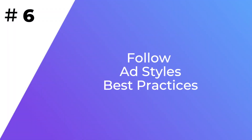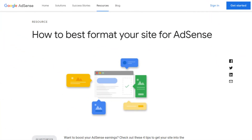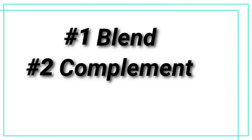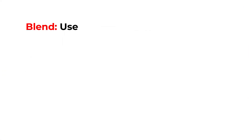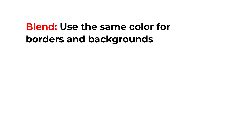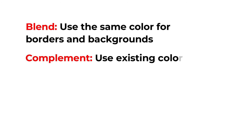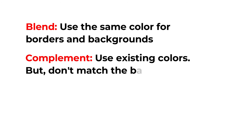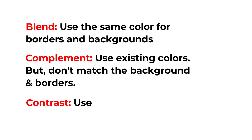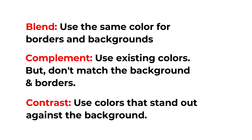The style and size of your ads can make a massive difference between the ads your visitors will notice and click on and the ones they skip right over. For best results, Google recommends using colors for your ad text and links that already exist on your site. Three popular techniques are proven to drive clicks: blend, complement, and contrast. To use the blend technique, use the same color for borders and backgrounds as that of your page. To use the complement technique, use colors that already exist on your site but don't match the background and borders exactly where the ads are placed. For the contrast technique, choose colors that stand out against the background of your site.